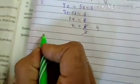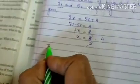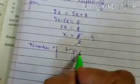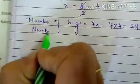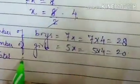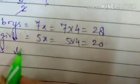So the number of boys is 7x, that is 7 multiplied by 4, 28. And number of girls is 5x, that is 5 multiplied by 4, 20. And total class strength is 28 plus 20, that is 48.